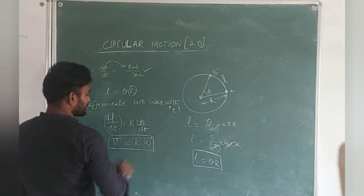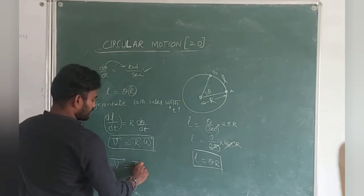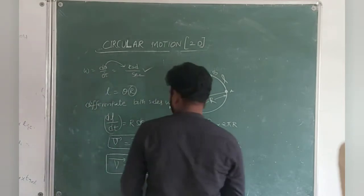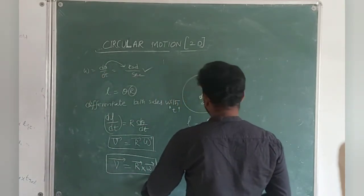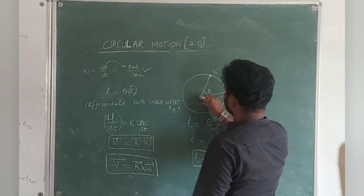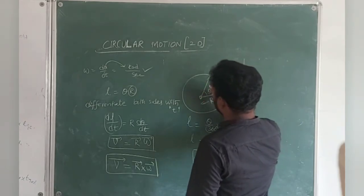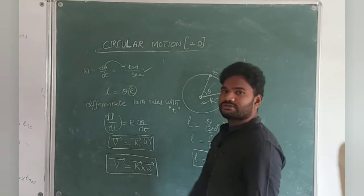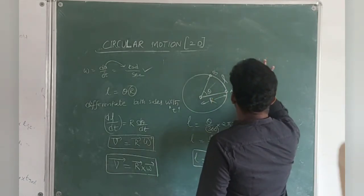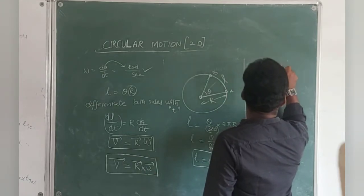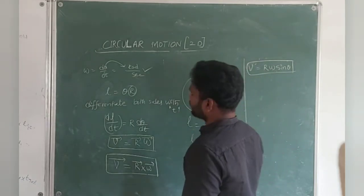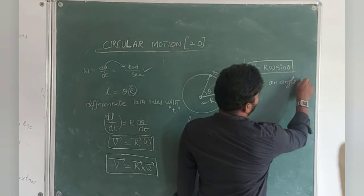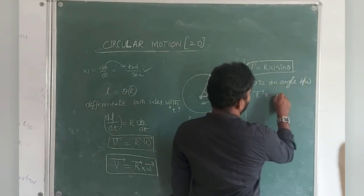Since v, r, and omega are all vectors, we write v̄ = r̄ × ω̄ (cross product). The magnitude is |v| = rω sinθ, where θ is the angle between r̄ and ω̄. r̄ is a position vector because the object changes position over time. Two vectors multiplied give a vector — that is called a vector product.